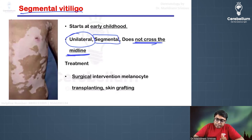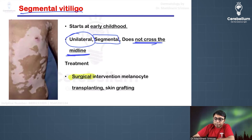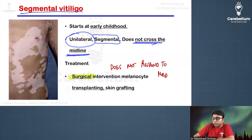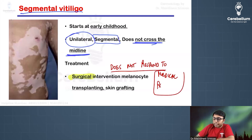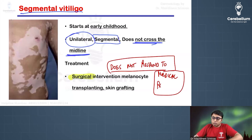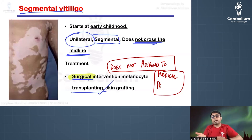Segmental vitiligo is treated using surgical intervention because it does not respond to medical treatments. The usual topical agents or phototherapy given for non-segmental vitiligo will not work here. Therefore, in these patients, we must perform surgical intervention.